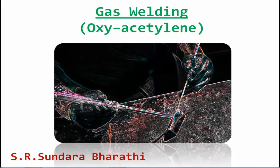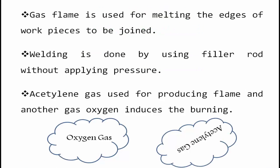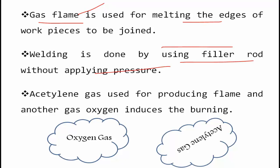Good morning. In this class we will discuss gas welding. Here we use oxy-acetylene gases. A gas flame is used for melting the edges, and after melting, the pieces are joined with the help of the gas flame. Welding is done using a filler rod — not an electrode type rod. This process is done without applying pressure.